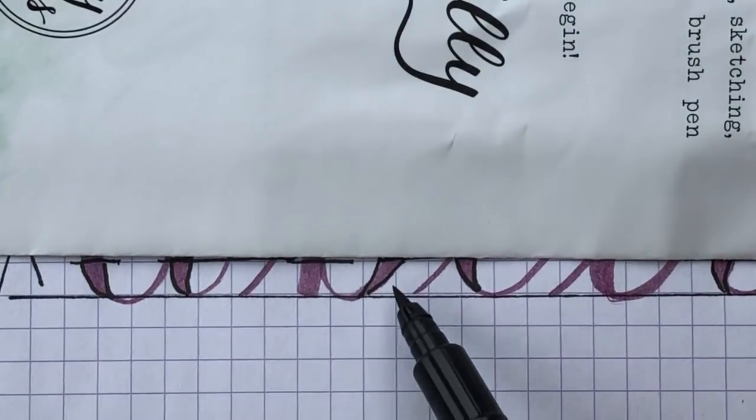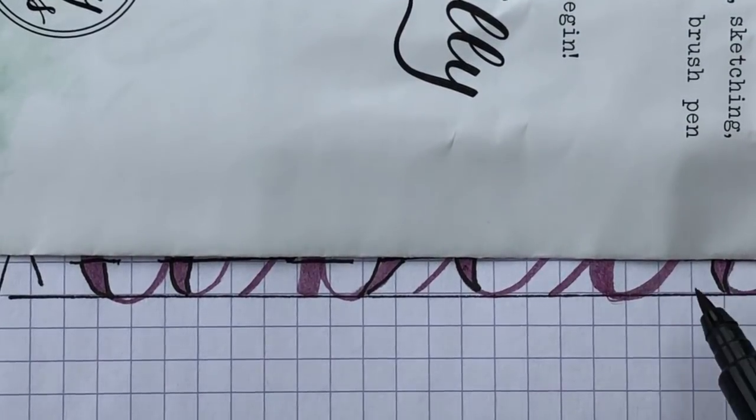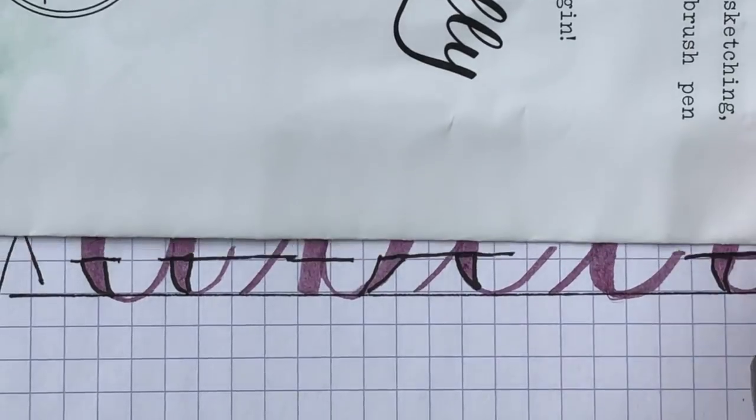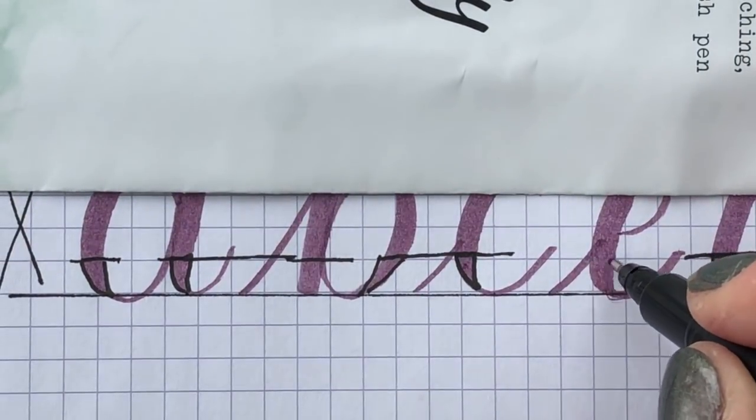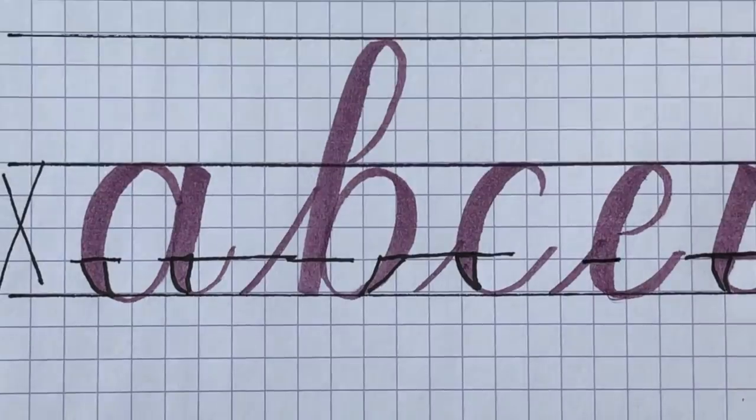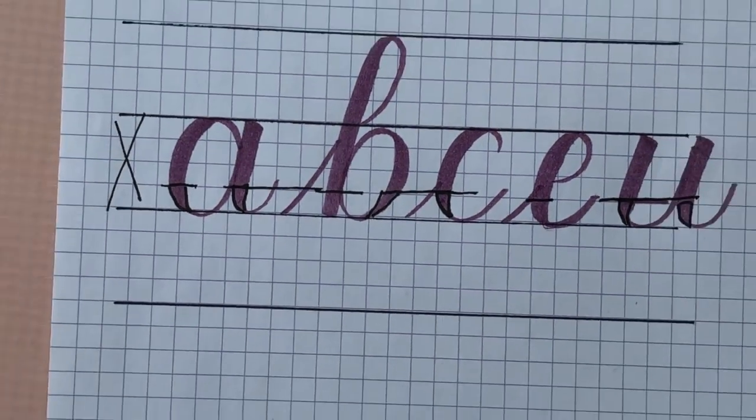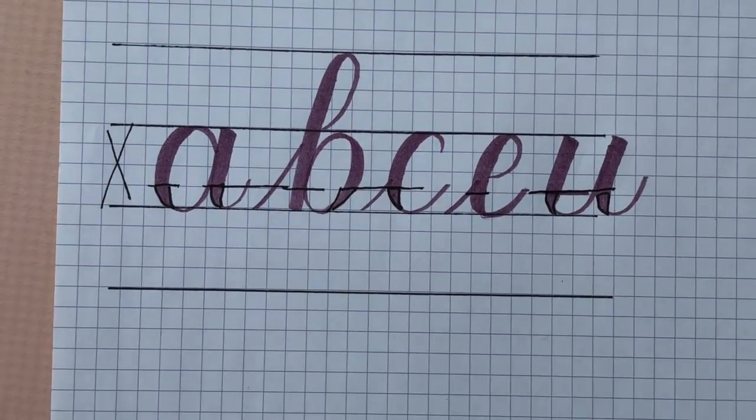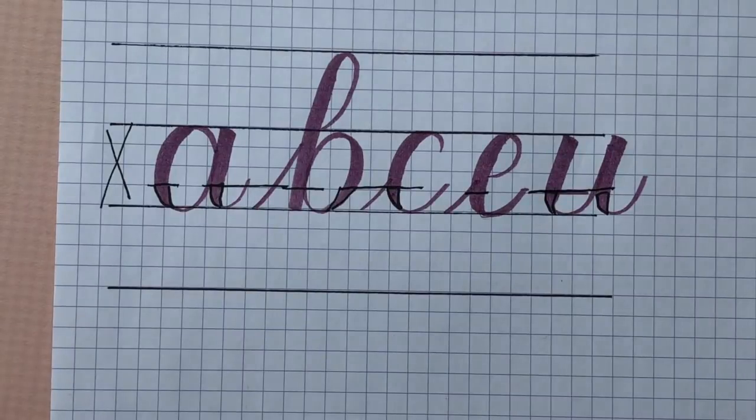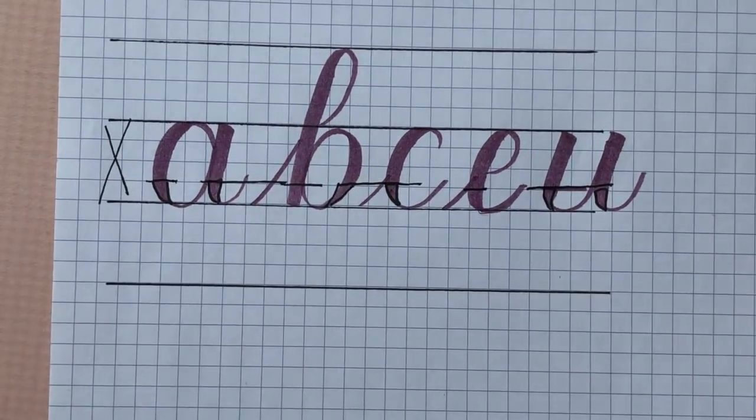You see the pressure triangles? That's where you're releasing, should be releasing consistently. All right, so that is the second big mistake, not releasing and creating that messy transition.